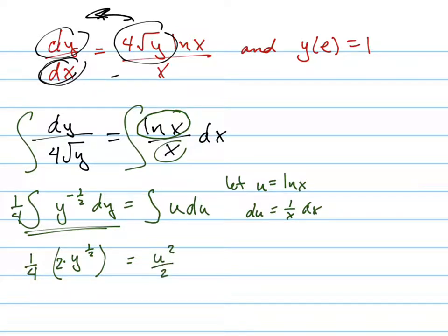And this equals u squared over two. So let's simplify both those. That's just one-half the square root of y equals, and I'm plugging this in for u. So that equals ln of x, one-half ln of x squared.